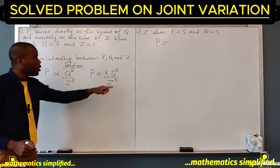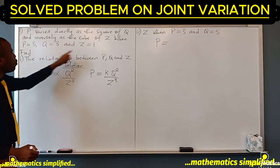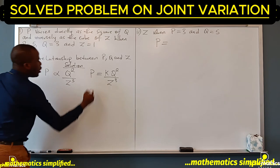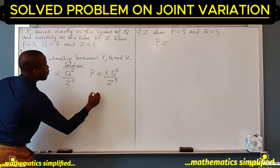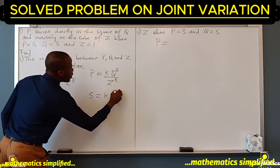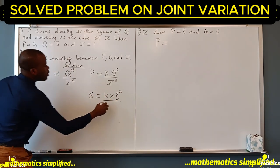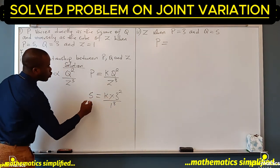We have to substitute 5 for p, 3 for q, and 1 for z into this equation. So if we do that, we'll have p is 5 equals k times q.